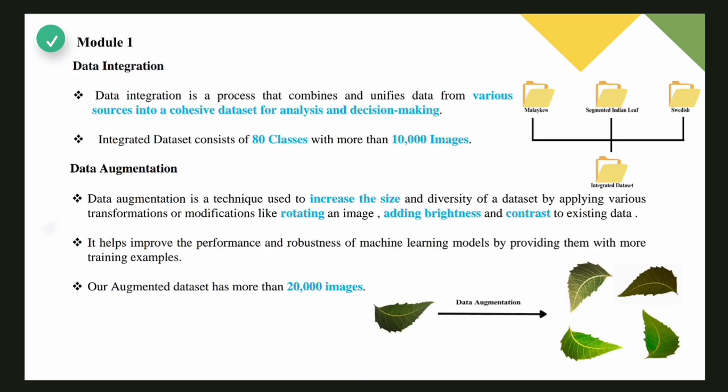The discussion of modules is as follows. Module 1 contains data integration and data augmentation. We used three datasets which are combined together to form an integrated dataset. Our integrated dataset contains 80 classes with more than 10,000 images. Data augmentation involves expanding and diversifying a dataset through techniques such as rotating images or adjusting brightness and contrast. This method enhances the performance and resilience of machine learning models by exposing them to a broader range of training examples. Our augmented dataset has more than 20,000 images.